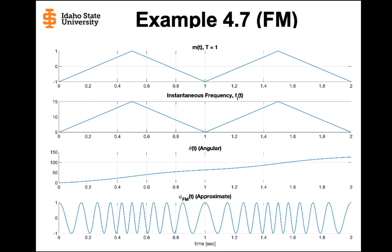At time 0.5, the FM signal is the most bunched up, and following that up to the instantaneous frequency, we can see that's where it reaches its maximum. Following the instantaneous frequency further to the right, at time 1 the instantaneous frequency is at another minimum, and correspondingly the FM signal at the bottom again shows the lowest frequency. This all makes sense.